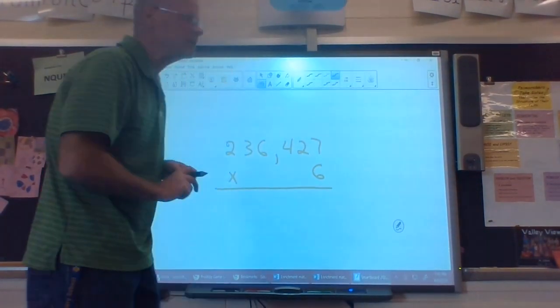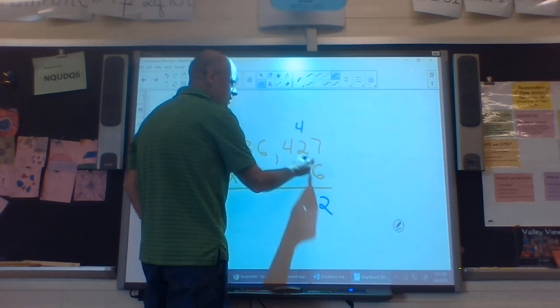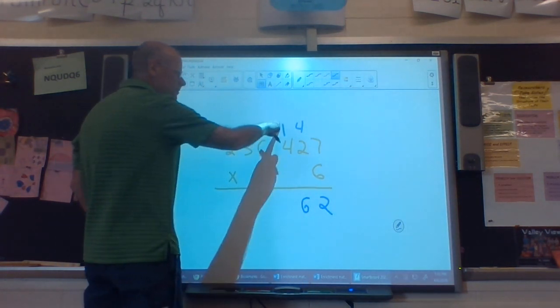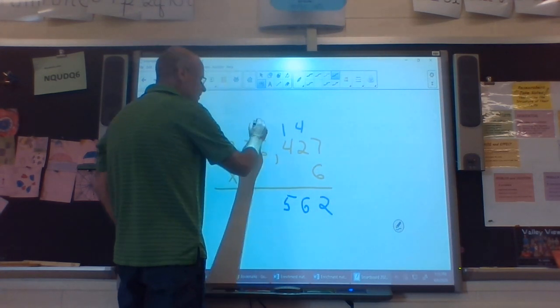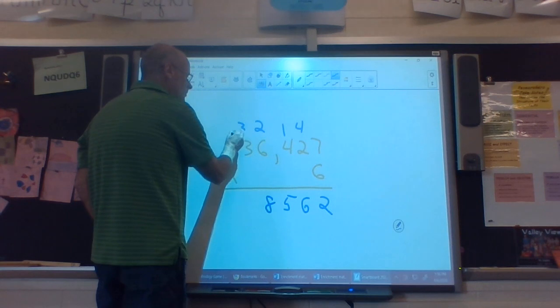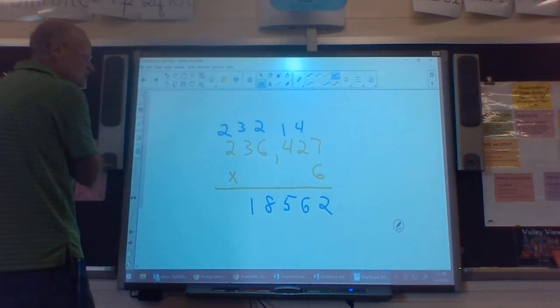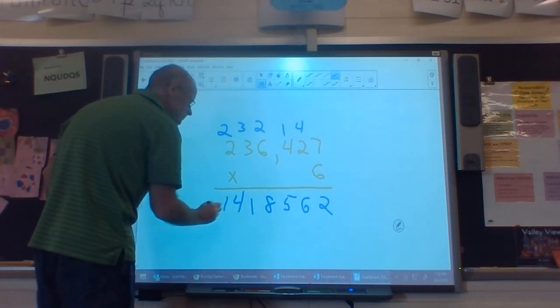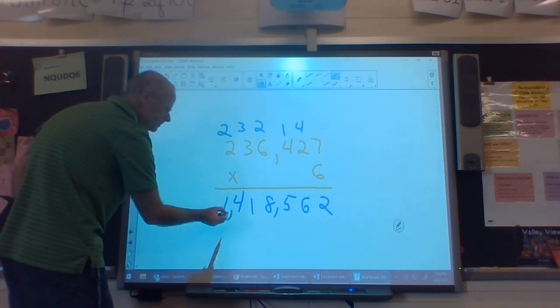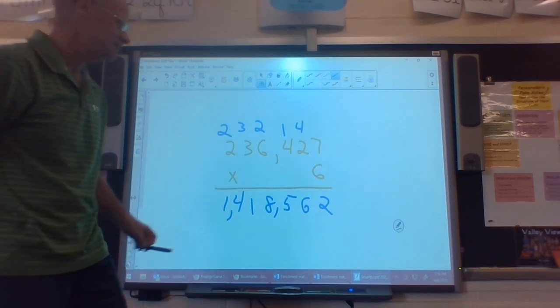In doing this problem, all you really have to know how to do is multiply by 6. So 6 times 7 is 42. I'm going to put down my 2, carry my 4. 6 times 2 is 12, plus 4 is 16. So put down my 6, carry 1. 6 times 4 is 24, plus 1 is 25. Put down my 5, carry my 2. 6 times 6 is 36, plus 2 is 38. Put down my 8, carry my 3. 6 times 3 is 18, plus 3 is 21. Put down a 1, carry a 2. 6 times 2 is 12, plus 2 more is 14. Now, I need 3 numbers in my house. So after 3, I'm going to put a comma, and 3 more and a comma. And if you got the answer 1,418,562, you have the answer that I have. I hope we're both right.